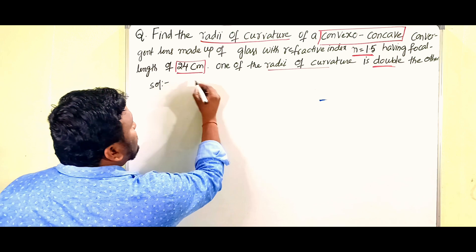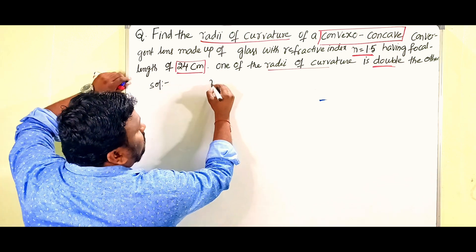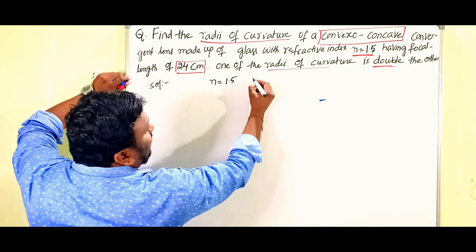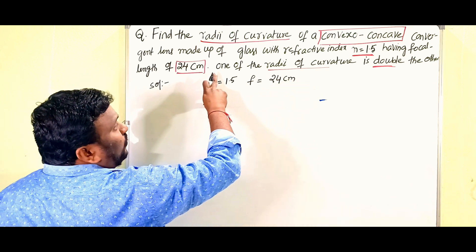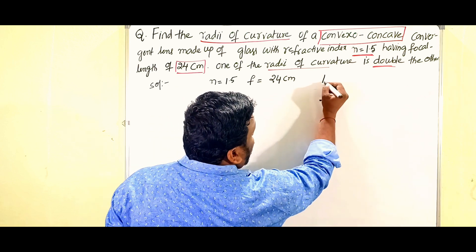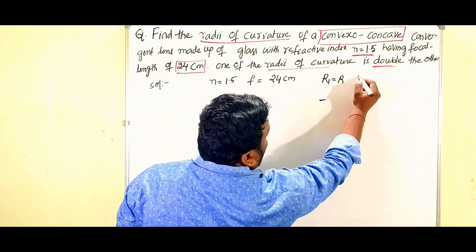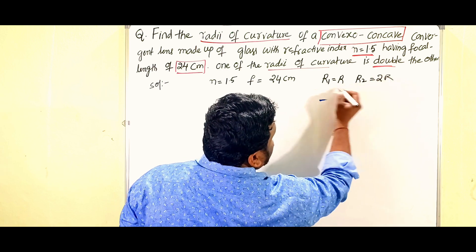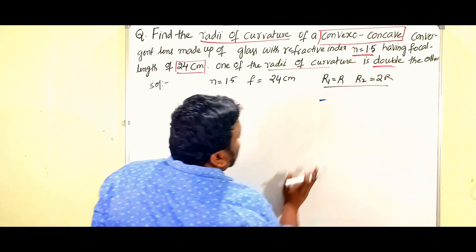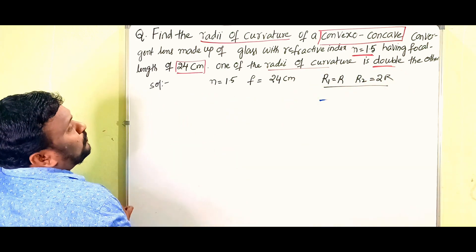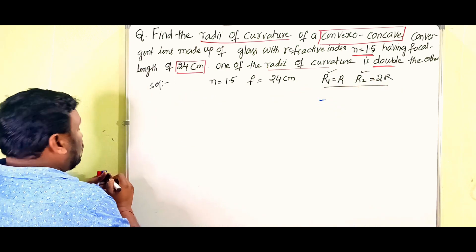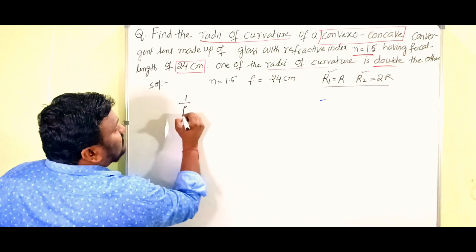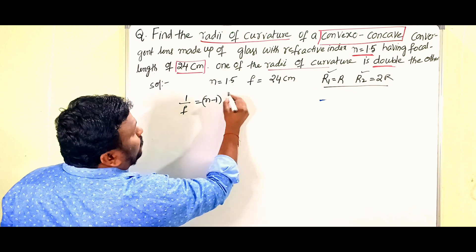The given values: refractive index n = 1.5, focal length f = 24 centimeters, and the condition is one of the radii of curvature is double the other. So if we take r1 = r, then r2 = 2r. We have to find r1 and r2 using the lens maker's formula: 1/f = (n − 1)(1/r1 − 1/r2).